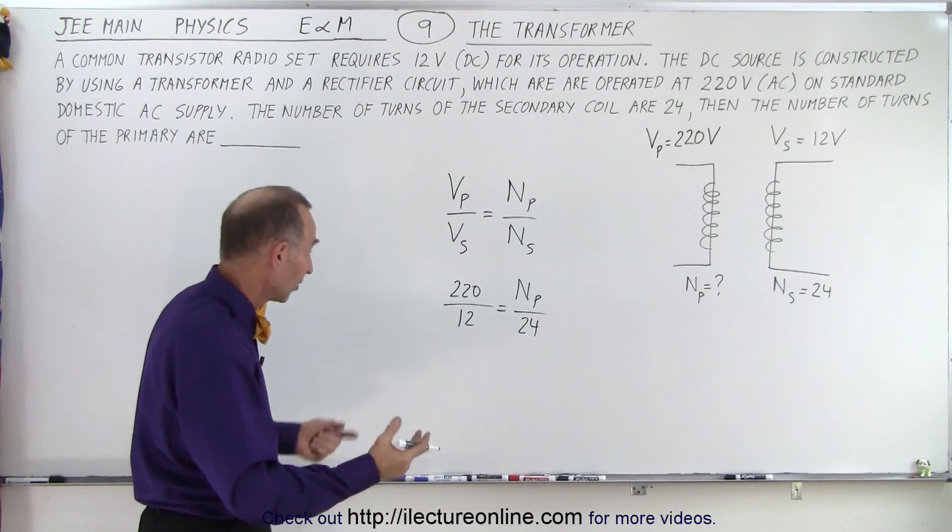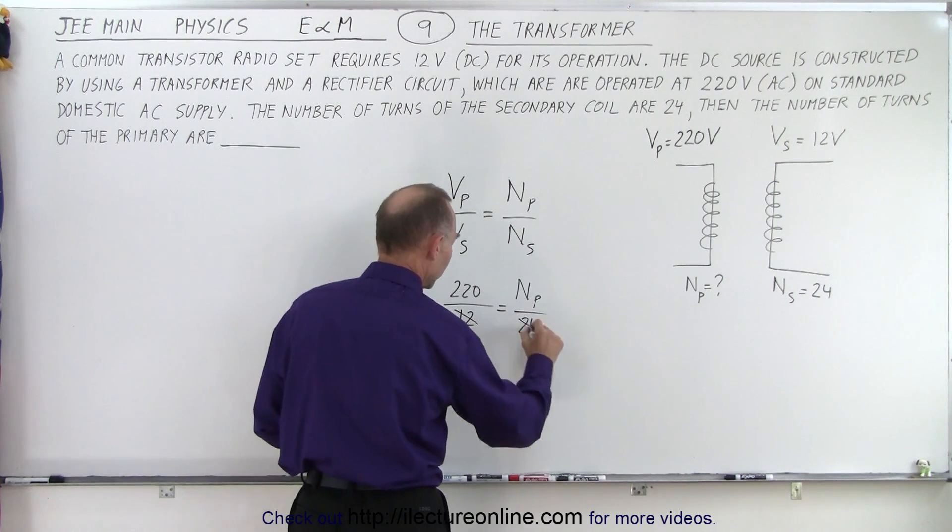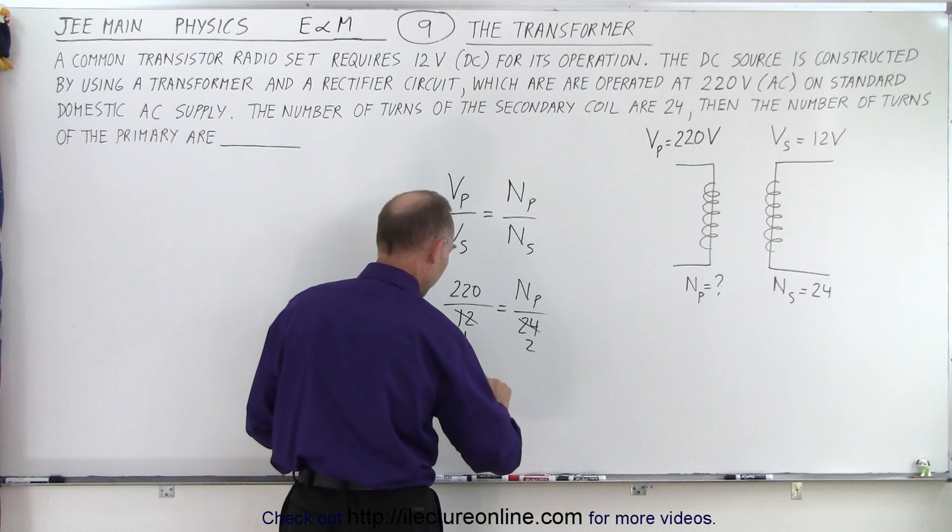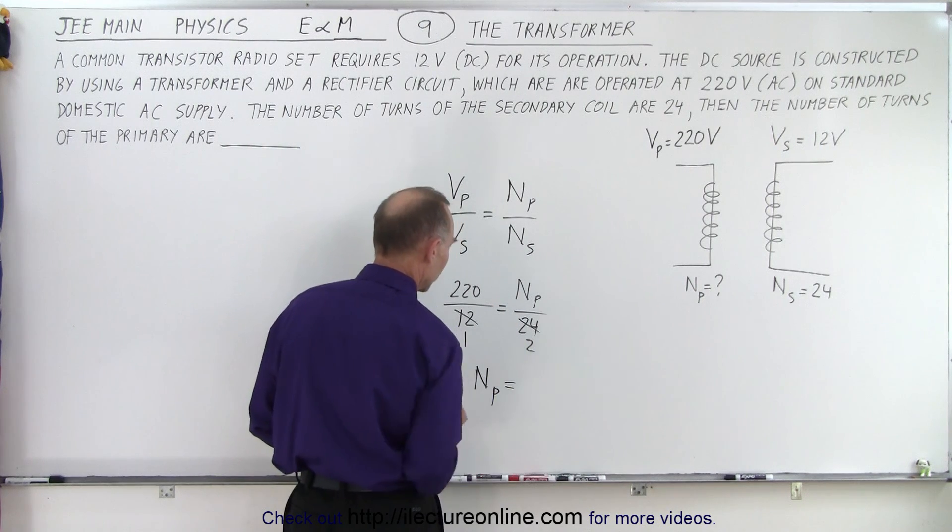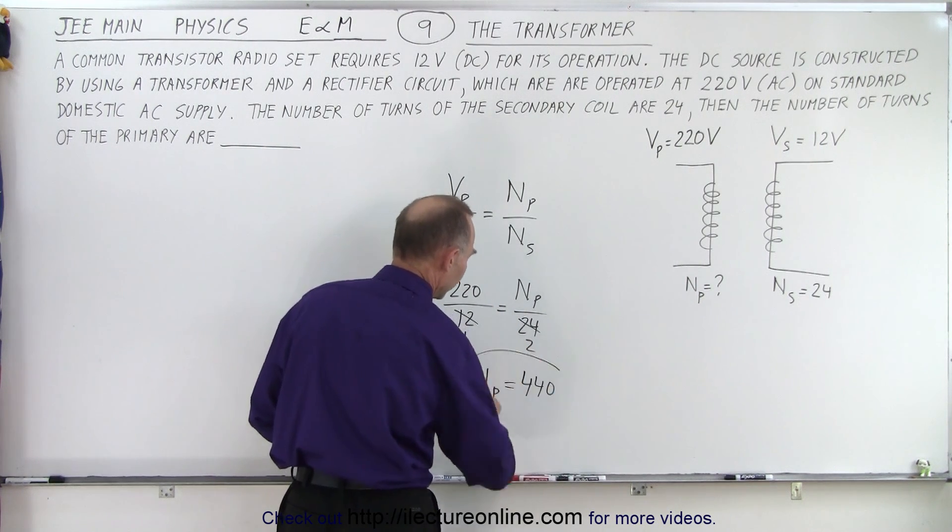Now notice we can simply multiply both sides by 12, so this becomes 1, this becomes 2. Cross multiplying, so the number of turns in the primary is 440.